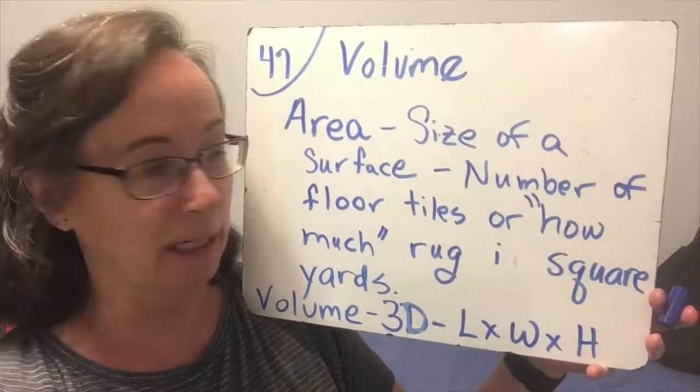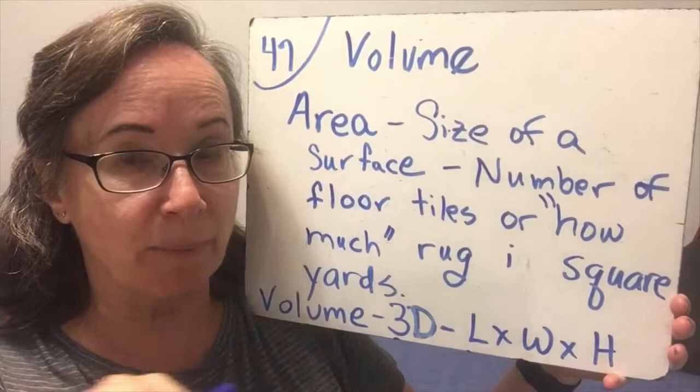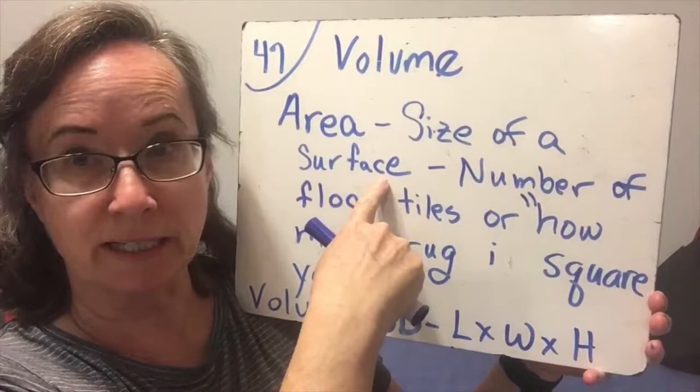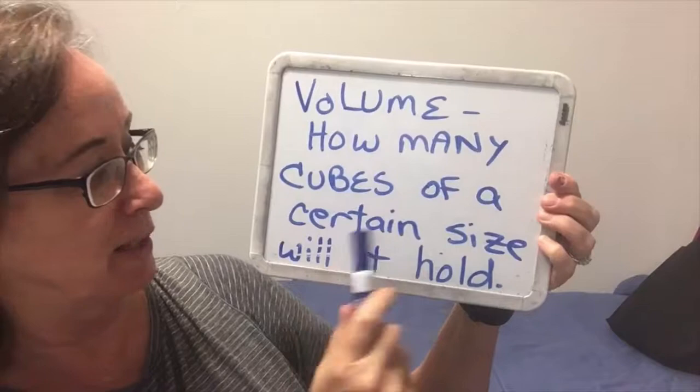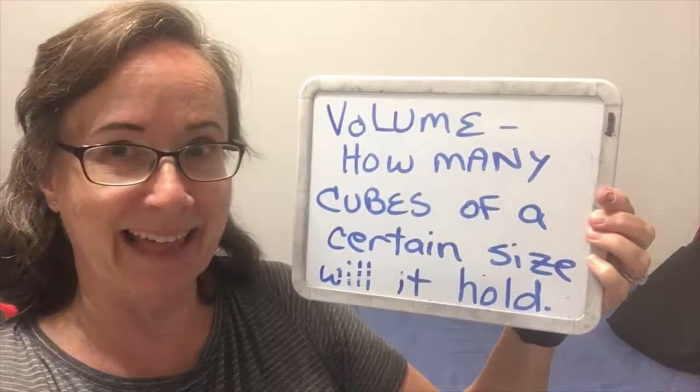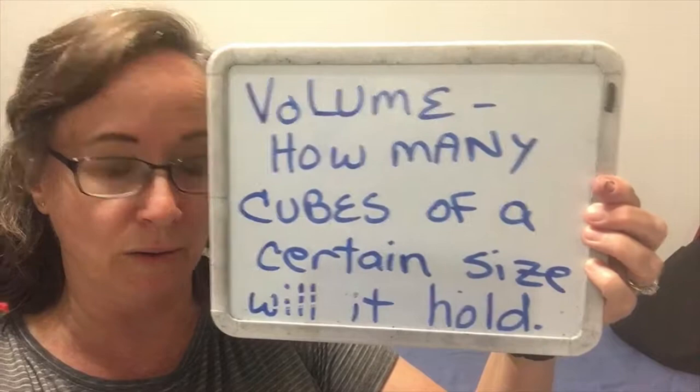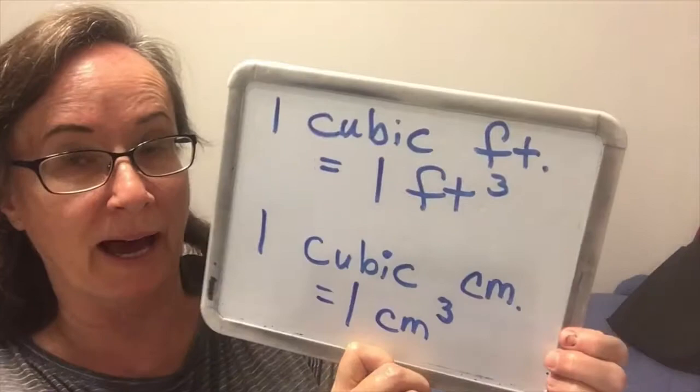Area is for something that is flat, and it is the measure of the surface of an item. Volume is how many cubes of a certain size a figure would hold. Volume is how much something will hold. When we're talking about volume, we talk about cubic measure.